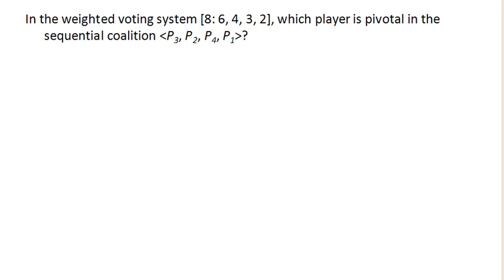So here we have a weighted voting system, and we're wondering which player is pivotal in the sequential coalition P3, P2, P4, P1.